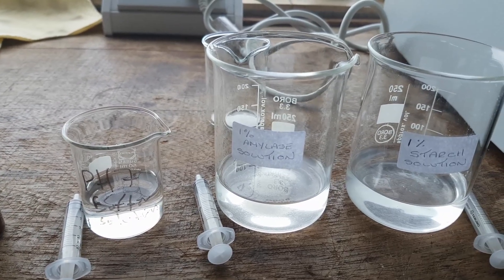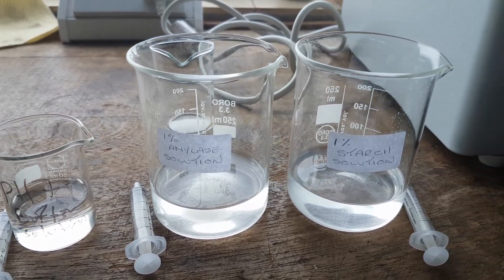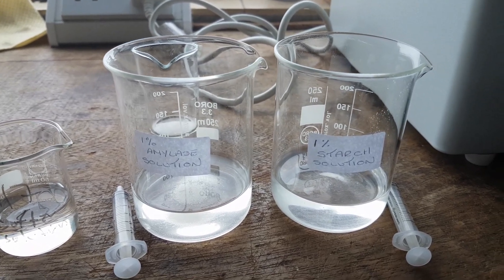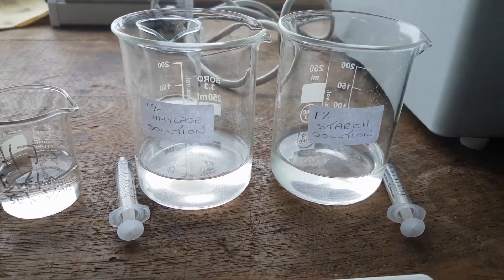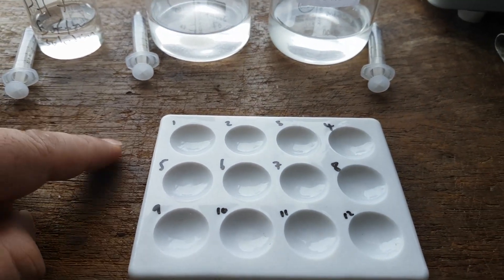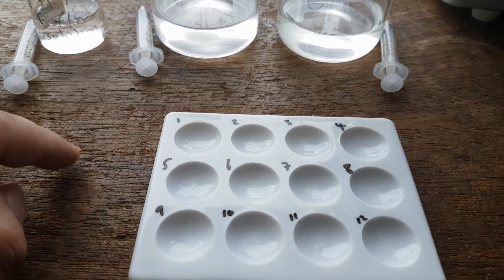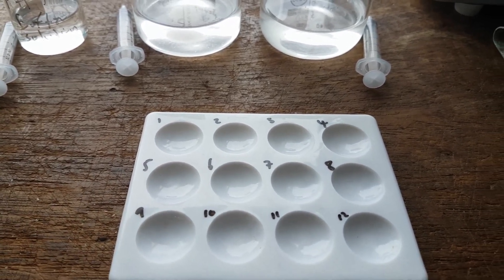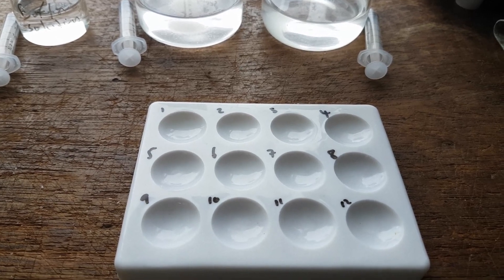We're going to use an amylase solution of 1% and a starch solution of 1%. That is the concentration and each one will have its own 2.5 ml syringe. We will also need a spotting tile. Now I've numbered them. The reason why I've numbered them is so that I know the order in which I'm going to place the solution in once I get to that part of the experiment.